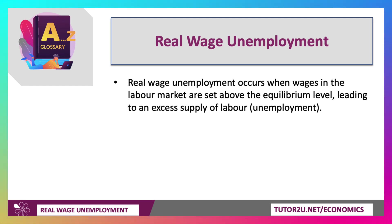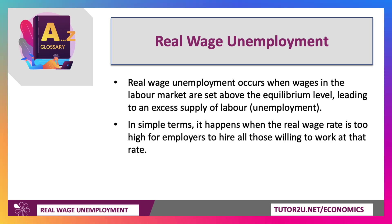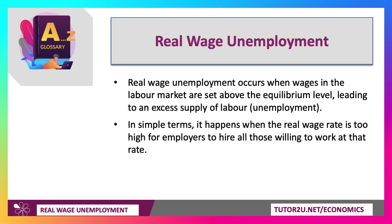This is a type of unemployment that occurs when wages in the labour market are set above, or persistently above, the equilibrium level, and that can lead to a surplus or an excess supply of labour, which is a proxy for unemployment. In simple terms, it happens when the real wage — the wage after inflation — is possibly too high for businesses, firms, or employers to hire all those who are willing and able to work at that rate.